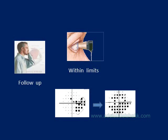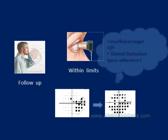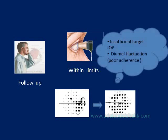Suppose you have a patient and on follow-up the pressure is normal but the visual field is deteriorating. In this situation you may think the drug is not effective enough and consider adding more drugs. But keep in mind, maybe the patient is not a good adherent to the treatment. So instead of just adding drugs, make sure to ask the patient whether they are using the drug in the proper way.